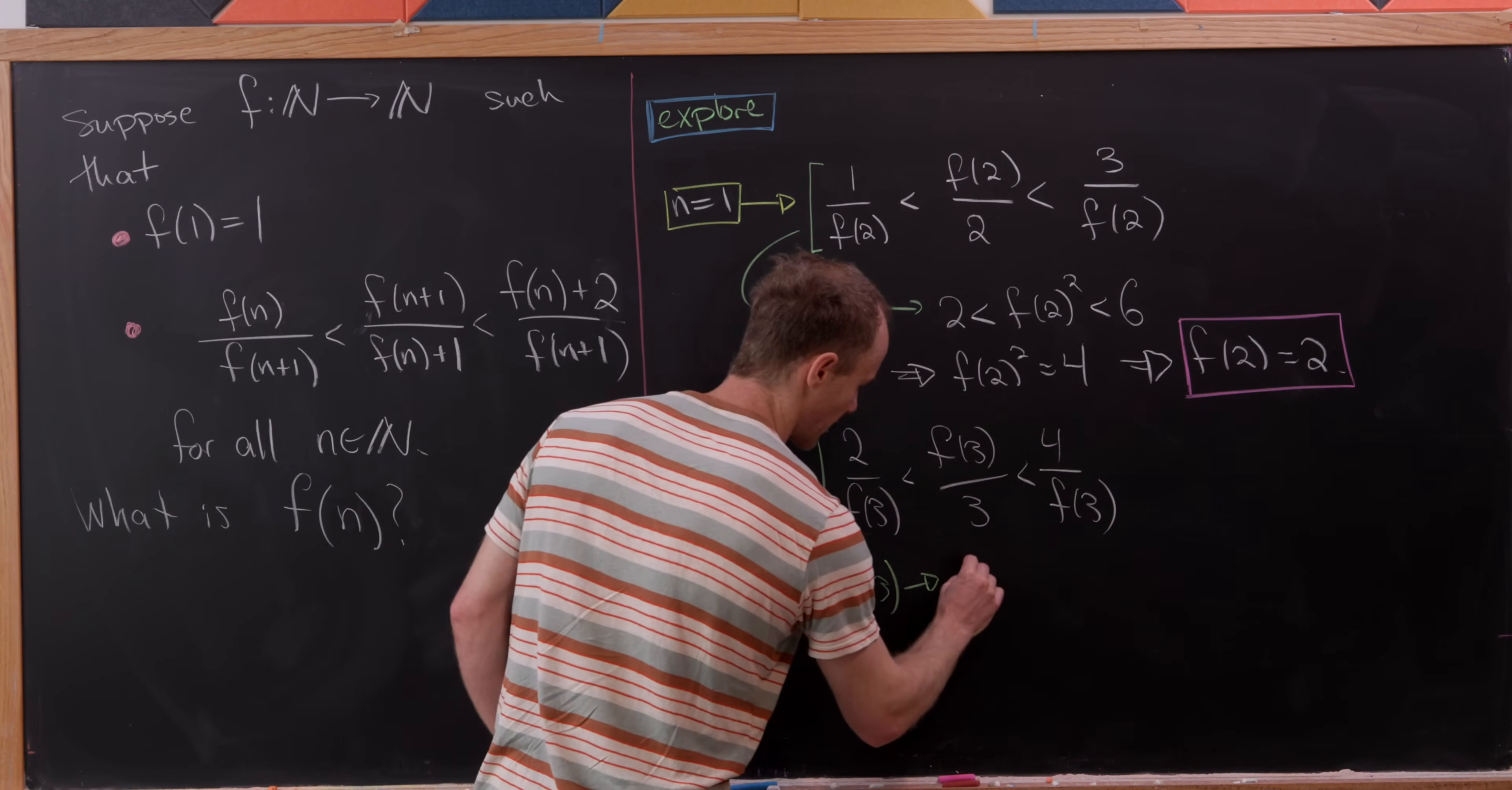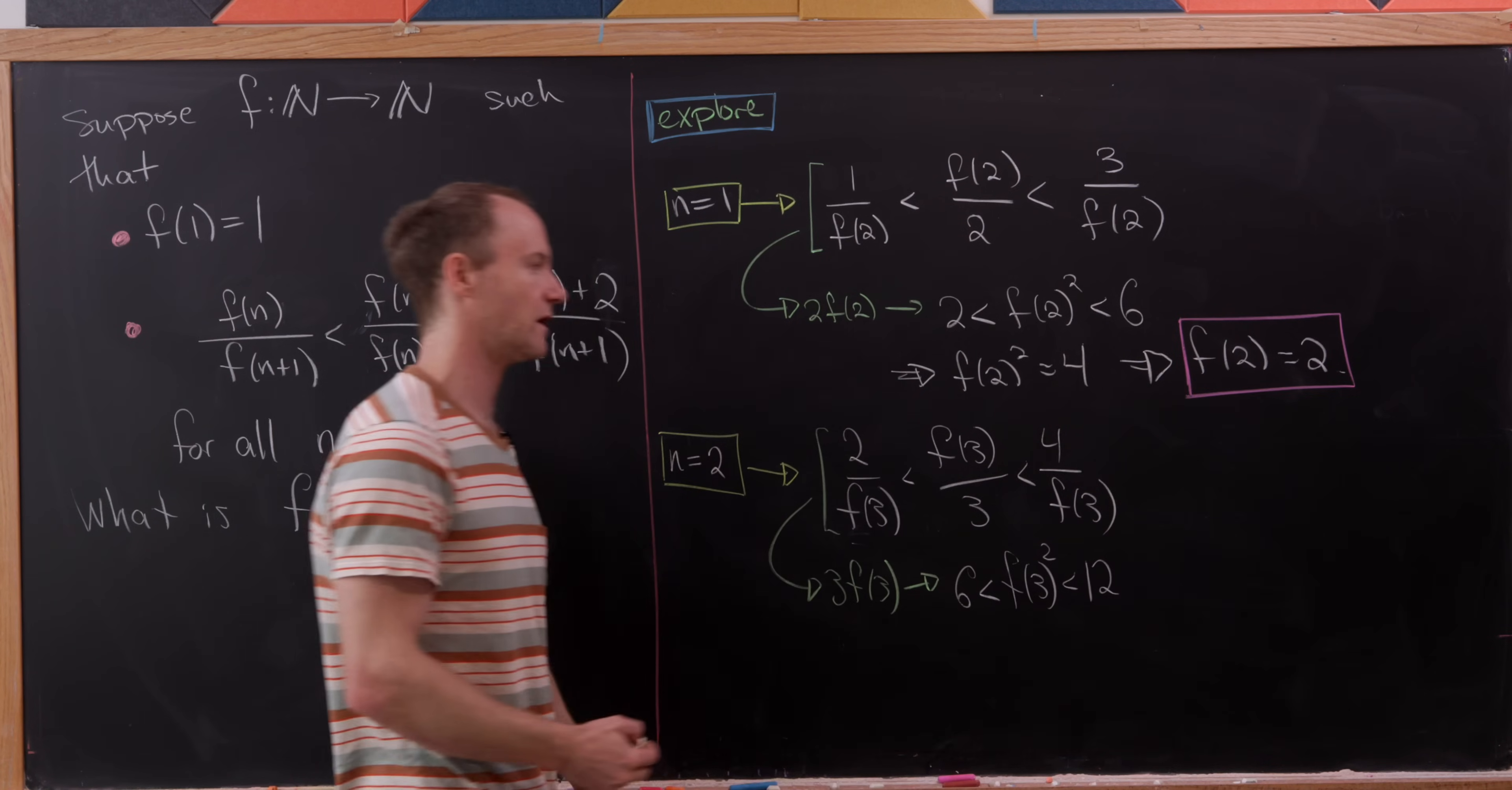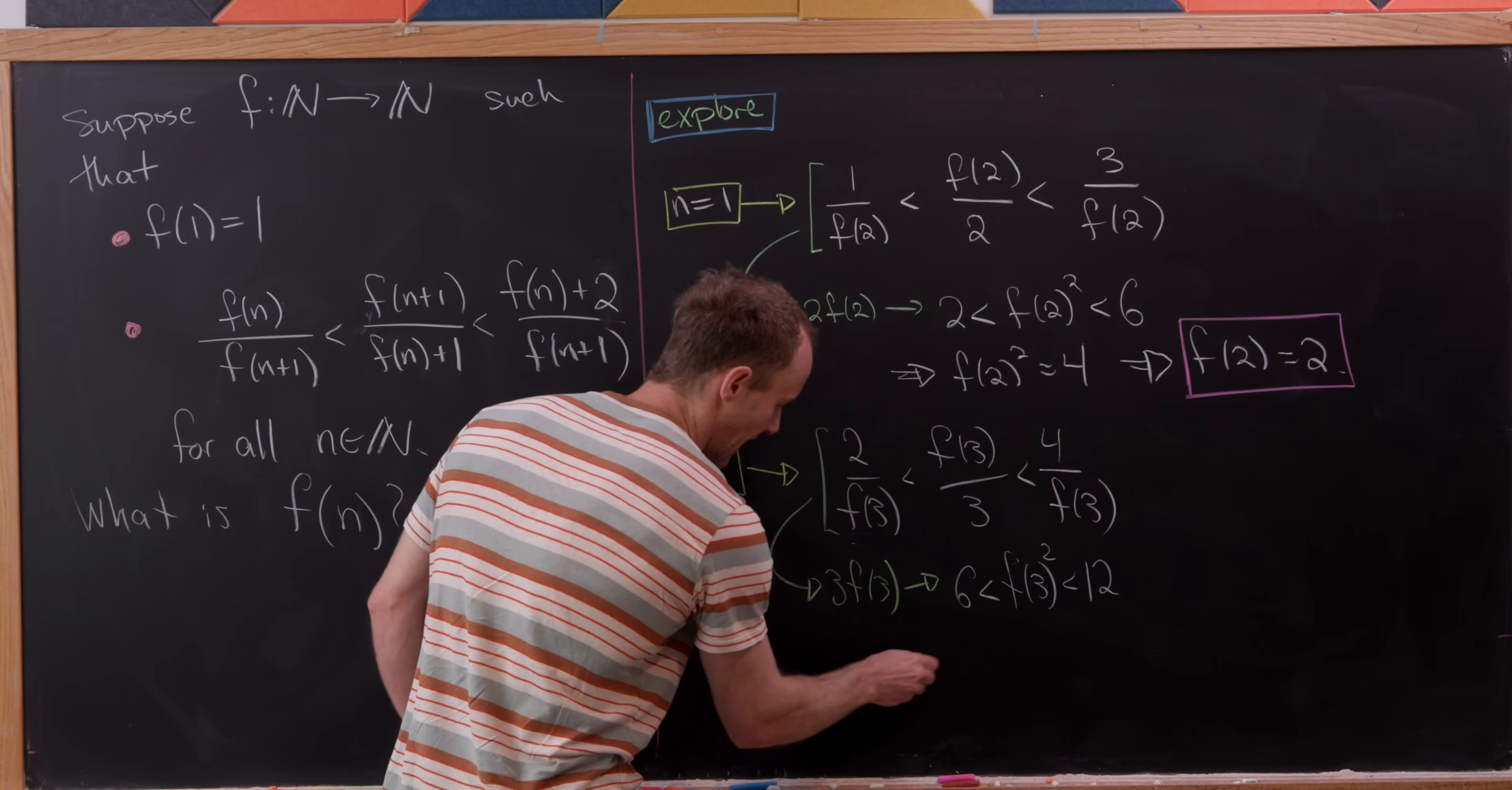So over here on this left portion we're going to get six, which is less than f of three squared, which in turn is less than 12. But again there's only a single perfect square between six and 12, and that's nine.